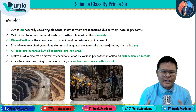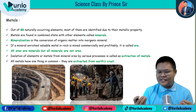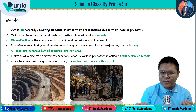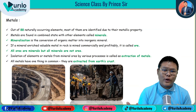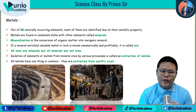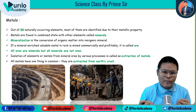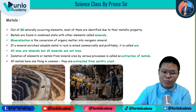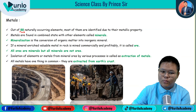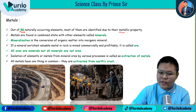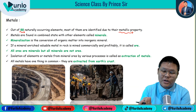When we think of metals, what comes to mind? Iron — 'falam' — is what generally comes to mind for students and common people alike. But that is a narrow definition. Out of 88 naturally occurring elements, most of them are identified due to their metallic properties. So metals are identified by their metallic property — this is an important point, and a good MCQ question.